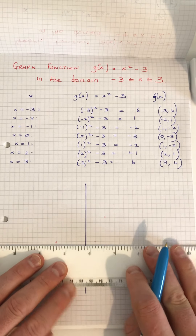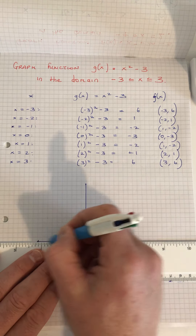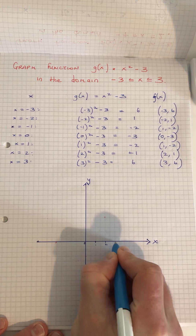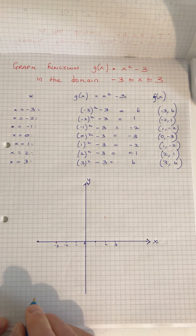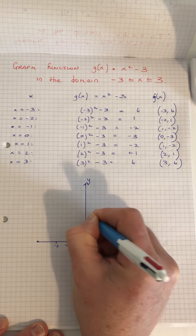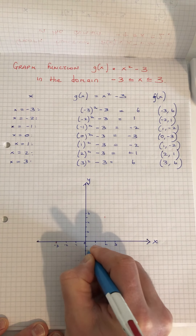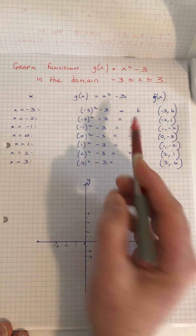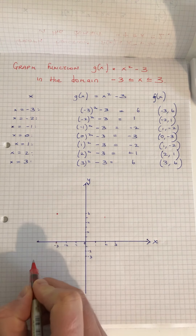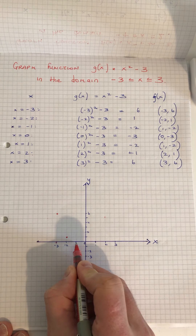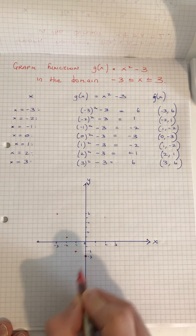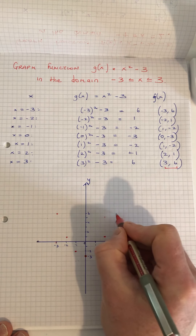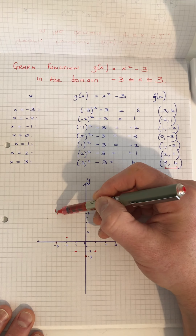Again we draw our x and y axis clearly labelled. On the x axis: 1, 2, 3 and minus 1, minus 2, minus 3. We need to get up as far as 6 on the y axis: 1, 2, 3, 4, 5, 6 and down to minus 3. Now we plot our points: (-3, 6), (-2, 1), (-1, -2), (0, -3), (1, -2), (2, 1), and (3, 6).